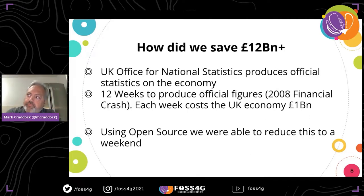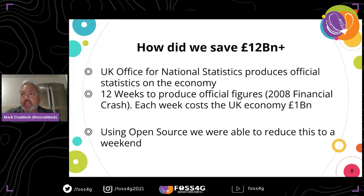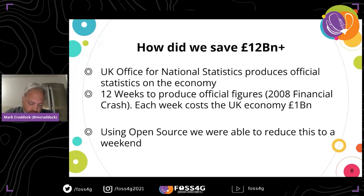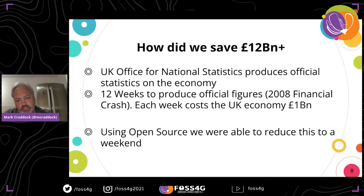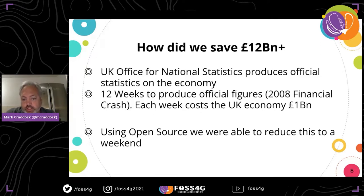Back in 2008, it took the UK Office of National Statistics 12 weeks to officially say the country's in a recession. They then notify the Cabinet Office, the Bank of England, the Treasury, and other government departments who can then implement action. But because it took 12 weeks to officially say 'we're doomed,' that cost the UK economy 1 billion every week.